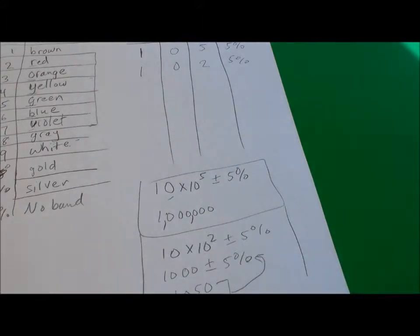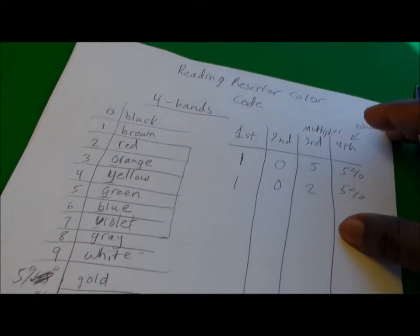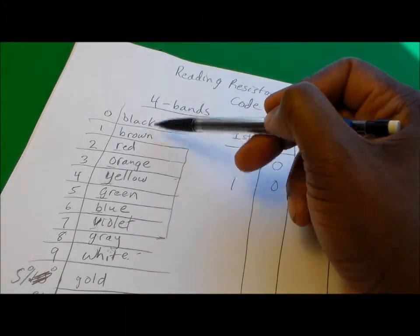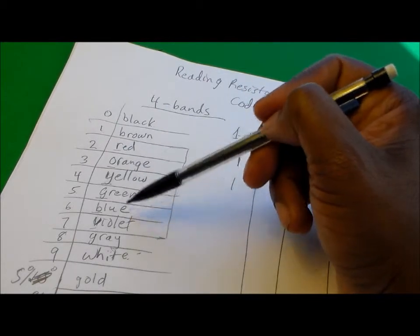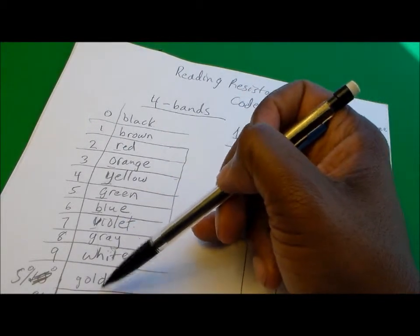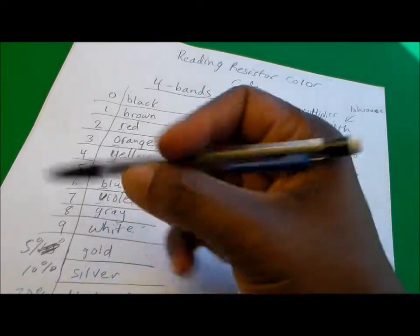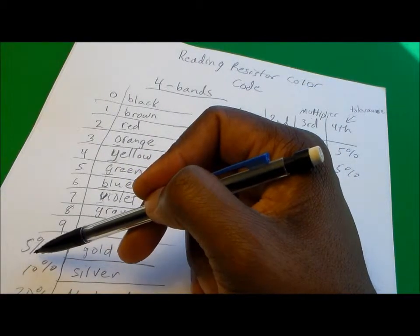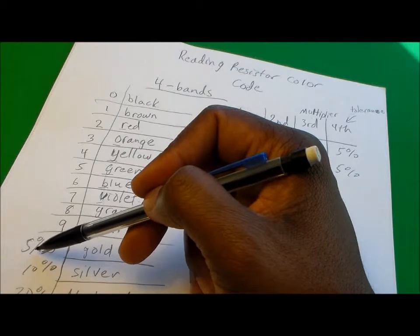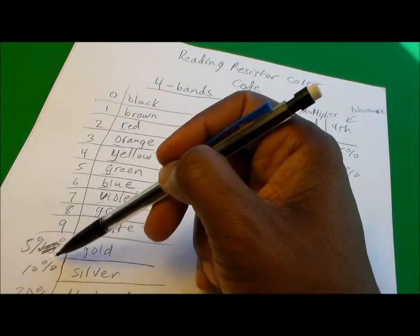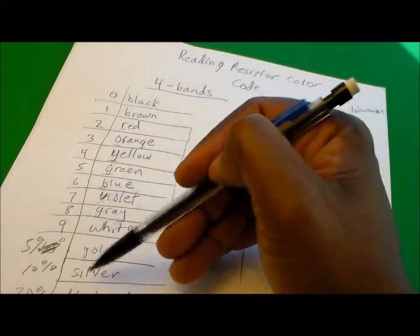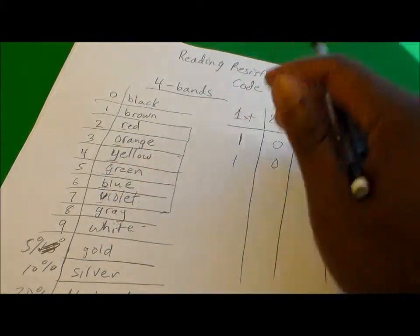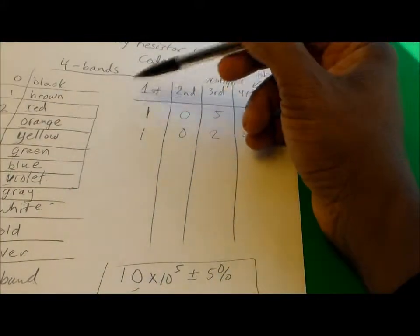So that's how you would read the color codes on the resistors. Again, you have to use your chart here: black, brown, red, orange, yellow, green, blue, violet, gray, white, gold, silver, and no band. The way I like to think about these is that gold is most popular, so the tolerance is smaller at 5 percent. Silver is second most popular at 10 percent, and no band with no precious metals is 20 percent.